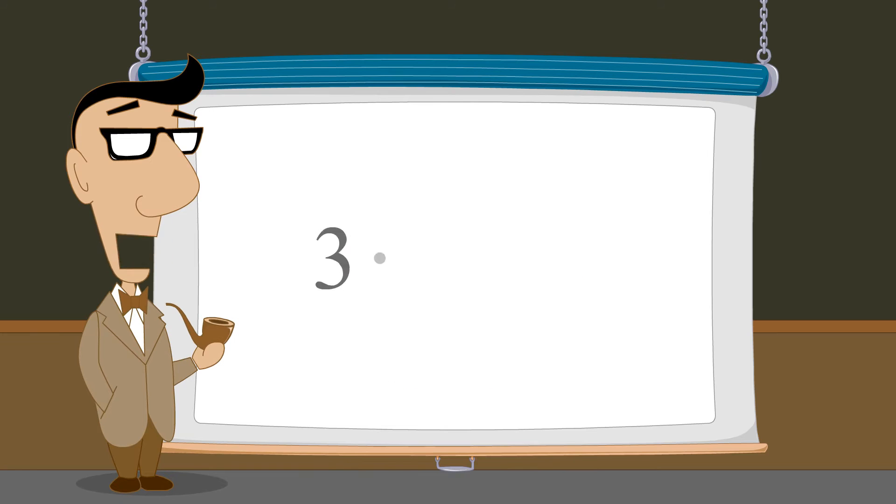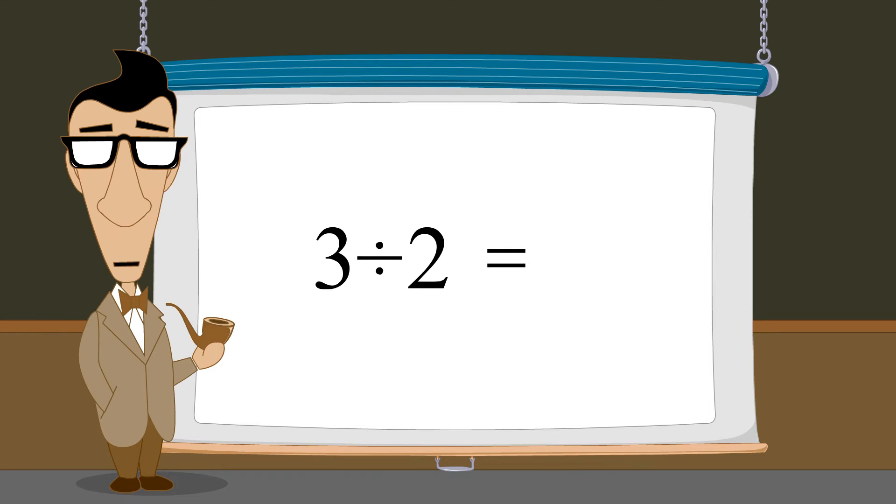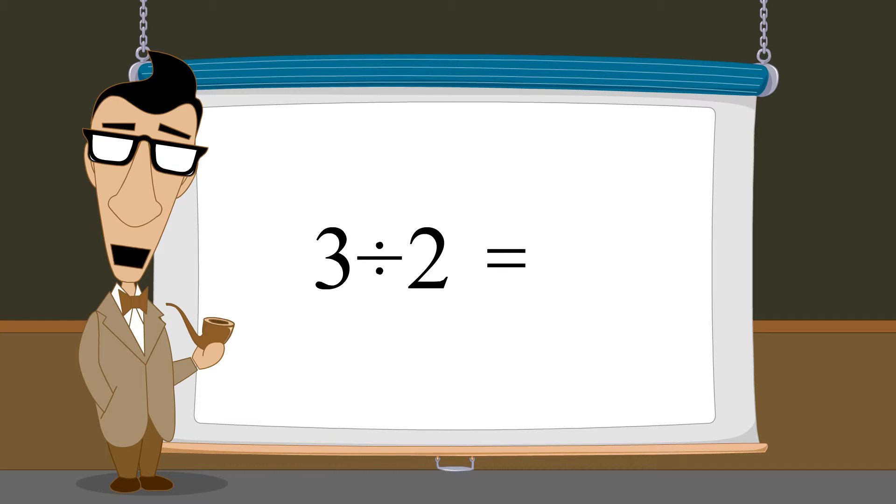In the previous lectures, we saw that although multiplying natural numbers always produces another natural number, the result of division between natural numbers cannot always be represented by a natural number.